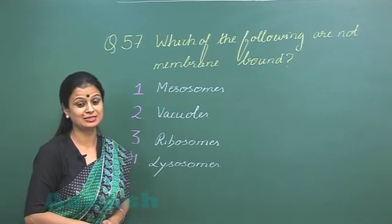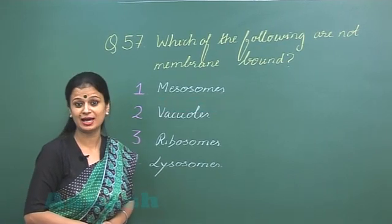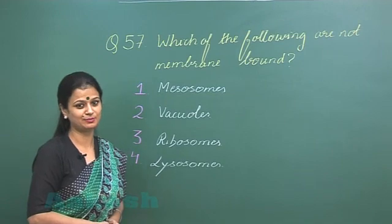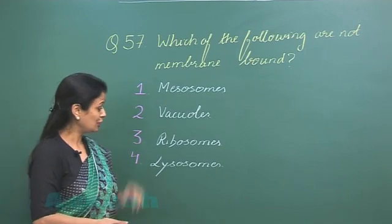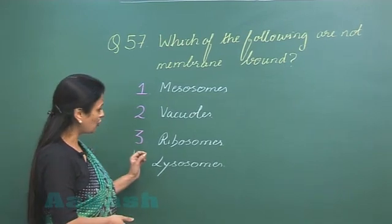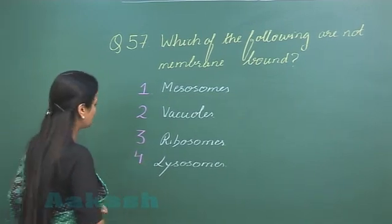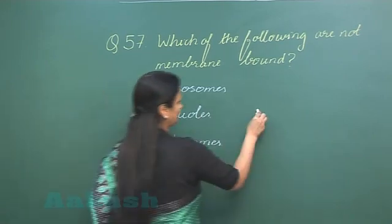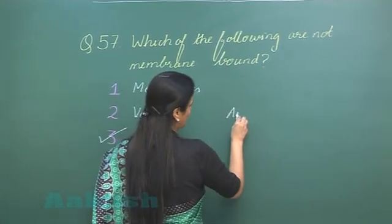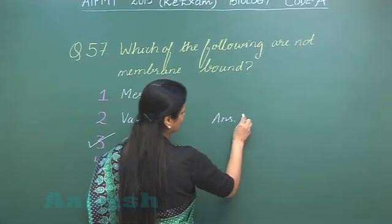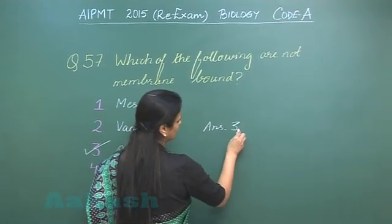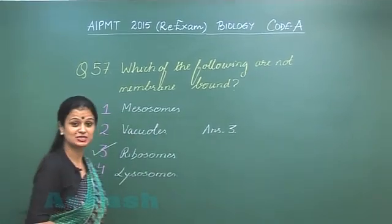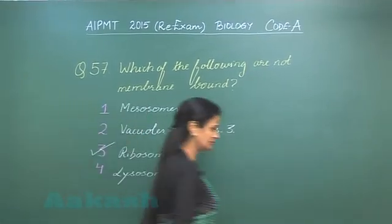Lysosomes are known as suicidal bags, and they are membrane-bound. So the right option for this question is option number three — ribosomes are the structure without a membrane. The answer is three.